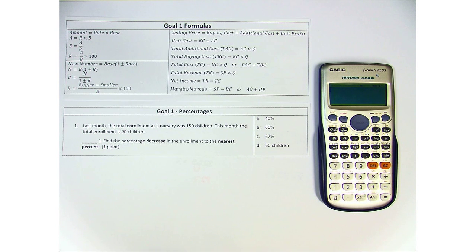Last month the total enrollment at a nursery was 150 children. This month the total enrollment is 90 children. Find the percentage decrease in the enrollment to the nearest percent.